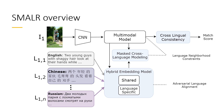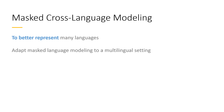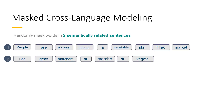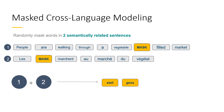The other component I'd like to highlight in SMALLER is masked cross-language modeling. The idea is to better represent many languages by adapting masked language modeling from the NLP literature into a multilingual setting. Here's how it works: we take two sentences that are semantically related — for example, an English sentence 'people are walking through a vegetable stall-filled market' and a French sentence describing the same image. We then randomly mask out two words, one in each sentence, and use both sentences with masked words as input to the model to predict the original masked-out words as output. This acts as a kind of data augmentation for our model.